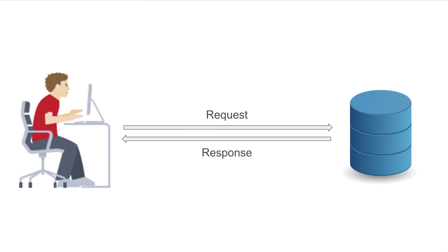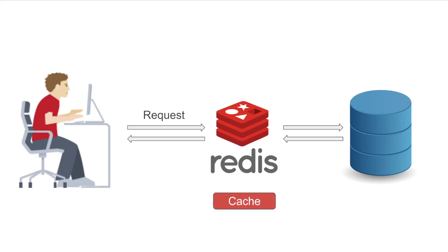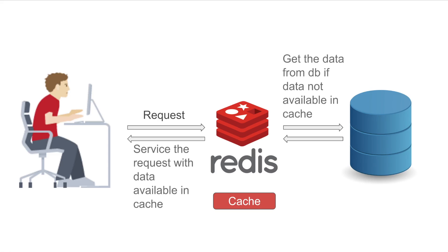Redis can be used as a second database to make your queries and transactions faster. This is a very conventional system where all your requests go to your main database and your database fetches the response from the disk and then services the request. Now here comes Redis. The requests that need to be serviced very, very fast and are very, very frequent can be put in the Redis memory and serviced from there, and the rest of the data can lie in your main database. This is a very, very good use case of Redis.